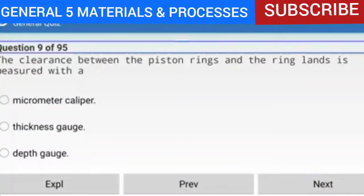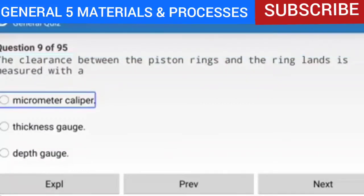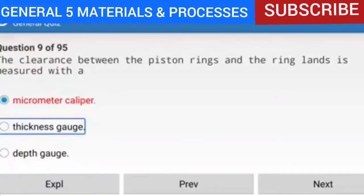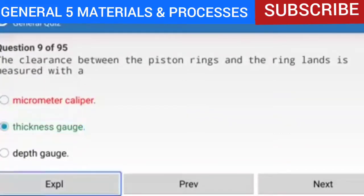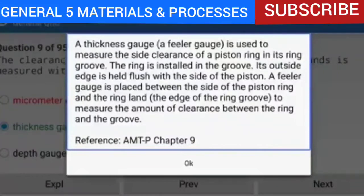Question 9 of 95: The clearance between the piston rings and the ring lands is measured with a thickness gauge (feeler gauge). It is used to measure the side clearance of a piston ring in its ring groove. The ring is installed in the groove; its outside edge is held flush with the side of the piston. A feeler gauge is placed between the side of the piston ring and the ring land — the edge of the ring groove — to measure the amount of clearance. Reference: AMTP Chapter 9.